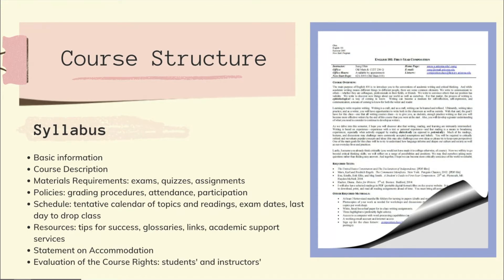The syllabus also generally has resources such as tips for success, glossaries, links, and academic support services — they can point you to tutoring and anything like this. All UT syllabuses will have a statement on accommodation, meaning if you have a disability you can get special assistance and the professor will work with you to ensure your success. Finally, there's an evaluation of course rights, covering your rights as a student and the rights of your instructor regarding how you interact in the class. The syllabus may also include the required textbooks.